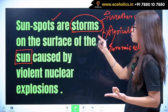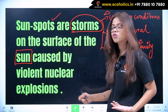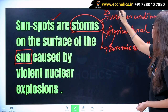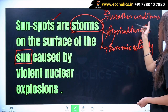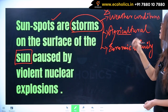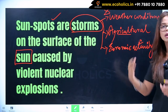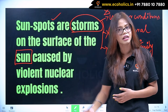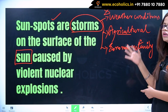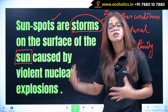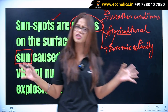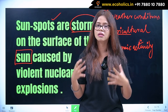Sunspots are the storms on the surface of the Sun caused by violent nuclear explosions. Due to changes in weather conditions, the agricultural sector is affected in its production and related economic activity. There are fluctuations, and after that these fluctuations spread among the different sectors of the economy as well.